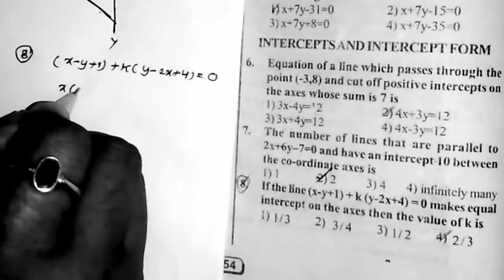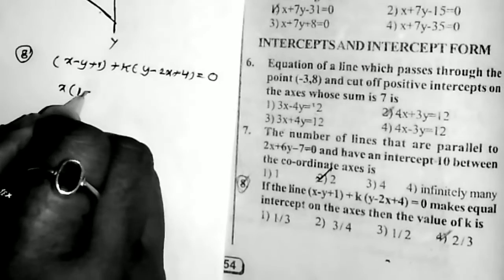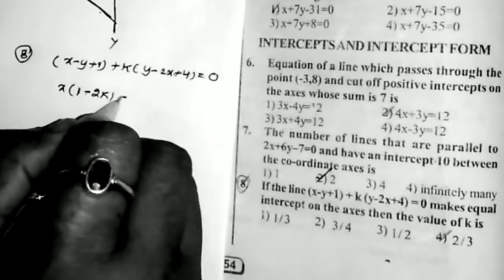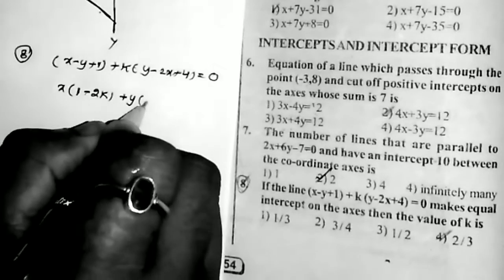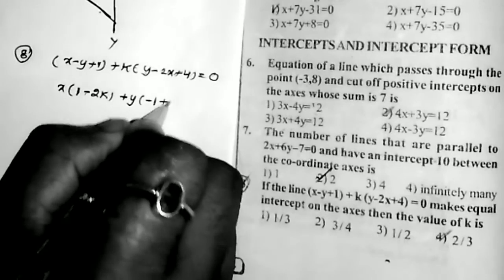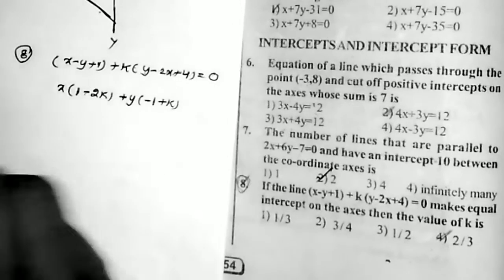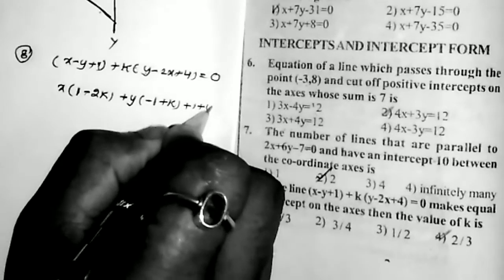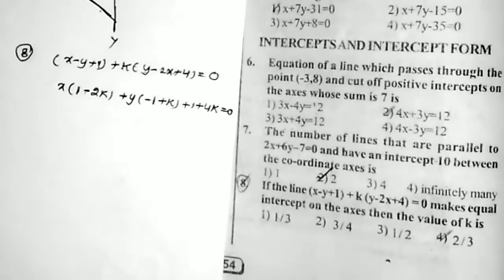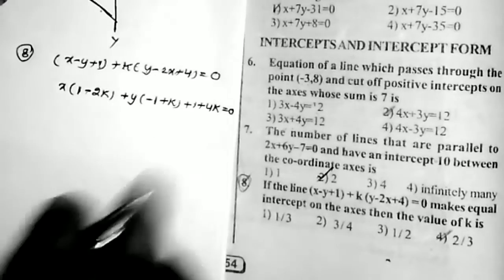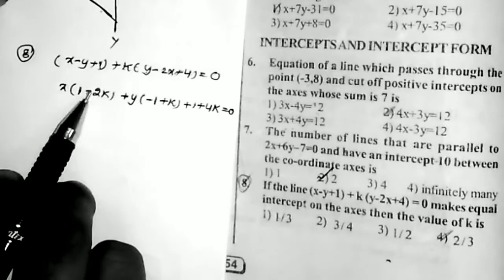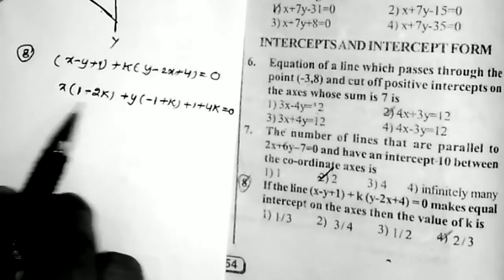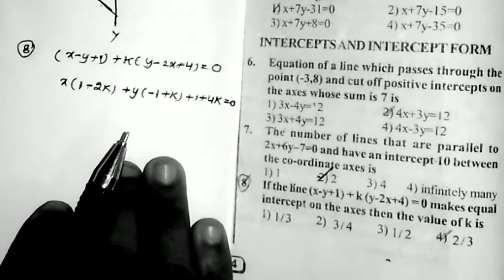Collecting x terms: x(1 − 2k). Collecting y terms: y(−1 + k). Constant: 1 + 4k. So the equation becomes (1 − 2k)x + (−1 + k)y + (1 + 4k) = 0. This is in the form ax + by + c = 0 where a = 1 − 2k and b = −1 + k.